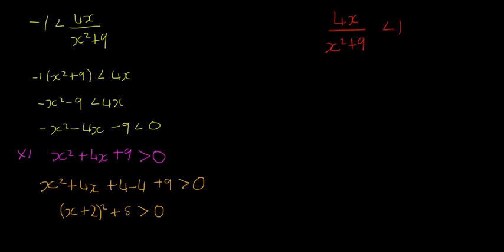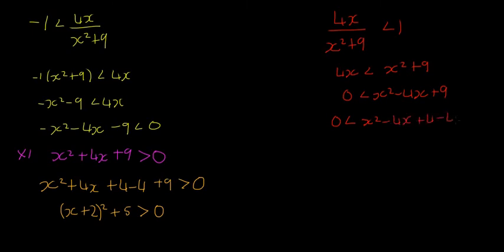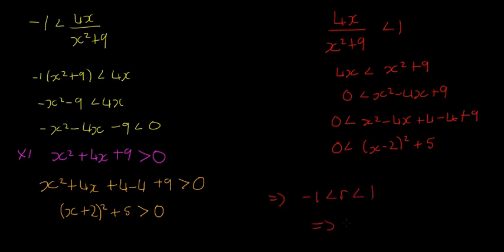For the right inequality, multiply both sides by (x²+9) again: 4x < x²+9. Rearranging: 0 < x² - 4x + 9. Complete the square: 0 < x² - 4x + 4 - 4 + 9, which gives 0 < (x-2)² + 5. Again, this is always true because (x-2)² is always non-negative and adding 5 keeps it positive.